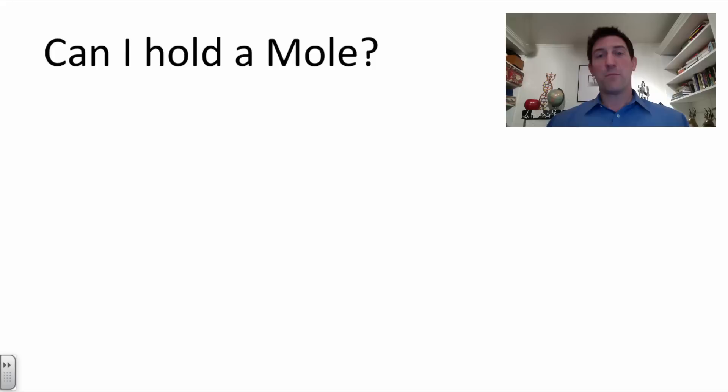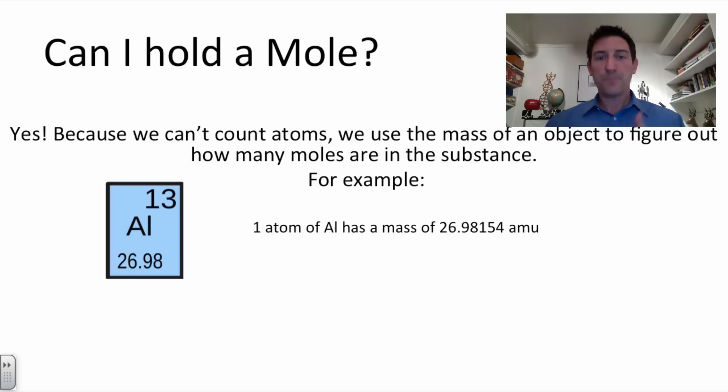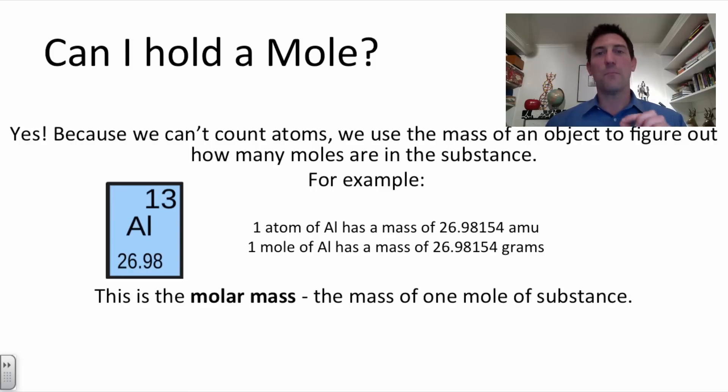Well can I hold a mole then? A mole is this big huge number but atoms are super tiny small. Can I hold one? Yes. Because you can't count atoms we still use the mass of an object to figure out how many moles are in the substance. What does that mean? Well if I look up aluminum on the periodic table I will see that one atom of aluminum has a mass of 26.98154 atomic mass units. But here's the great thing. In chemistry one mole of aluminum has a mass of 26.98154 grams. So it's the same number. I look it up on the periodic table to figure out how many grams are in a mole. And that's the same number of how many atomic mass units are in that element.